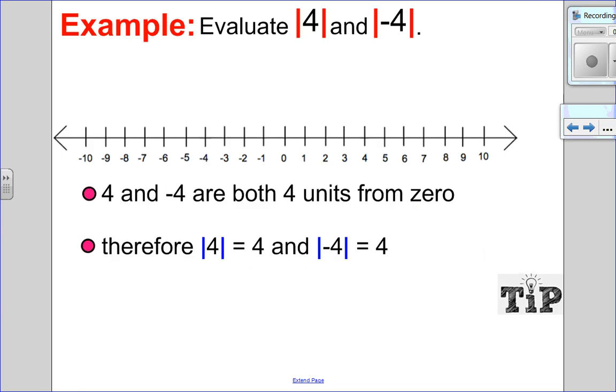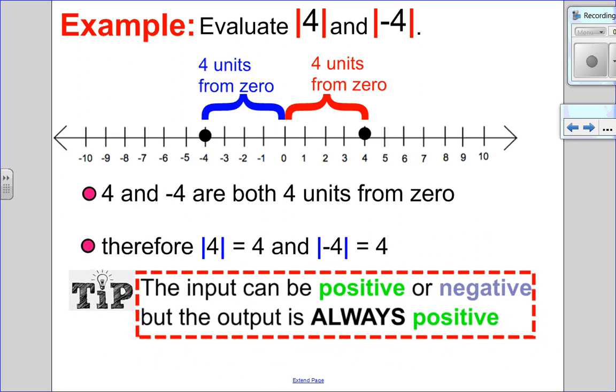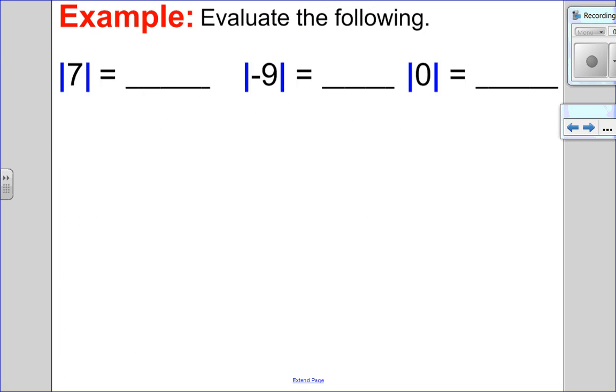So let's look at an example. I want to evaluate 4 and negative 4, the absolute value of each. So I have a number line there to help me. So let's look at the absolute value of 4. 4 is to the right of 0, it is 4 units away from 0. Negative 4 is to the left of 0, it is 4 units away from 0. So since both numbers are 4 units away from 0, that means the absolute value of both numbers must be 4. So the absolute value of positive 4 is 4, and the absolute value of negative 4 is also 4. This illustrates a really nice point that I'm trying to make. The input, whatever you put inside the absolute value, that can be positive or negative, but the output for absolute value will always be a positive value.